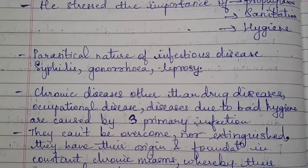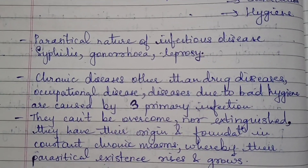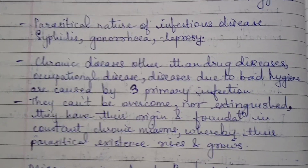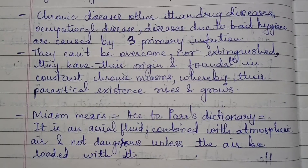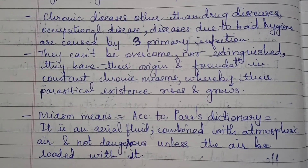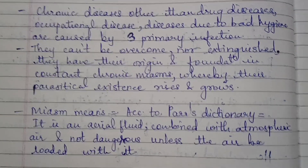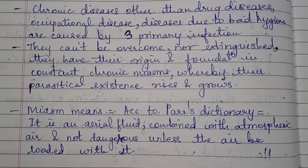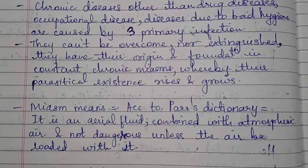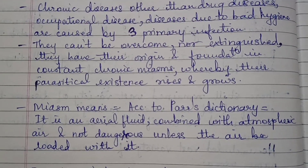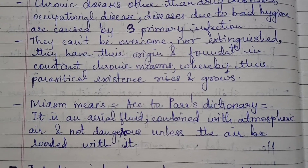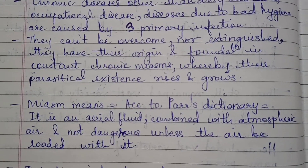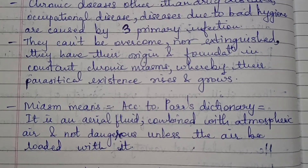He recognized the parasitical nature of infectious diseases such as syphilis, gonorrhea, and leprosy. Chronic diseases other than drug diseases and occupational diseases — including disease due to bad hygiene — are caused by three primary infections. They cannot be overcome nor extinguished.